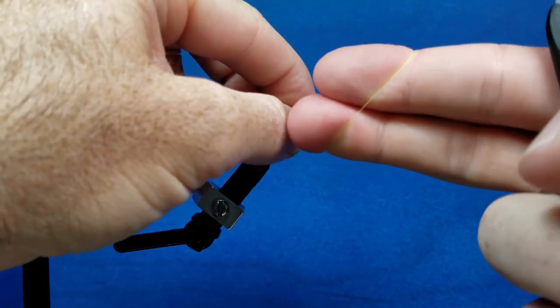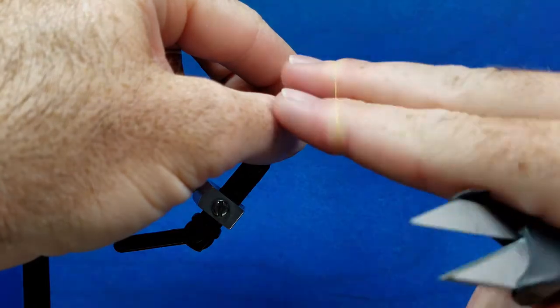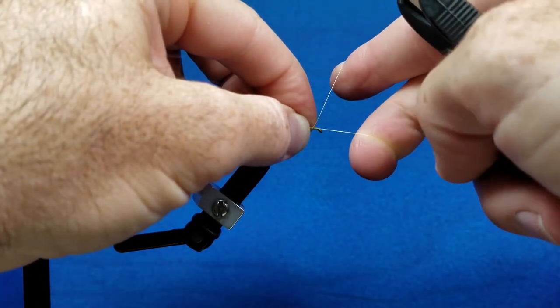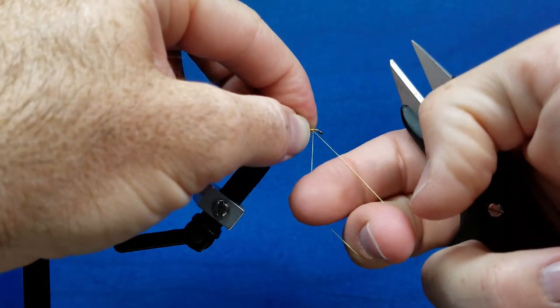So one more time here. Pivot on the index finger, catch that thread with the middle finger, vertical strand comes down, and they're back toward me.